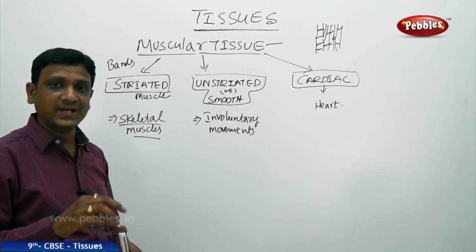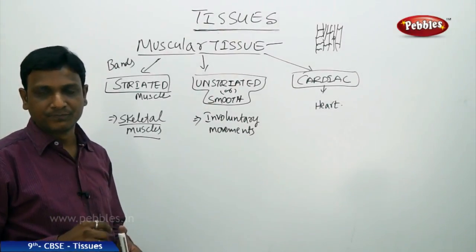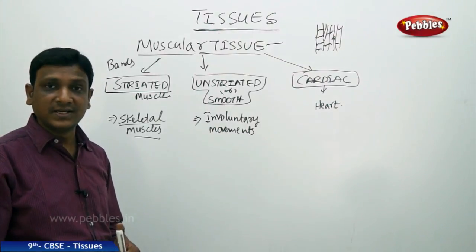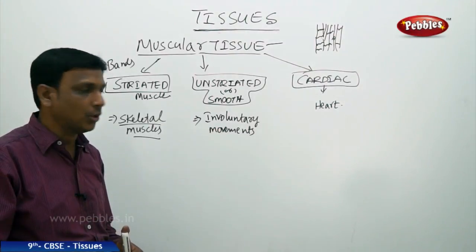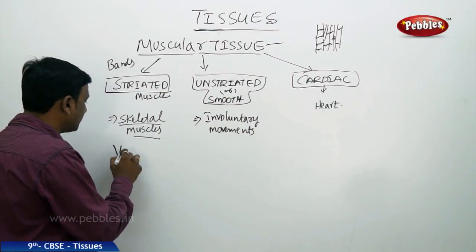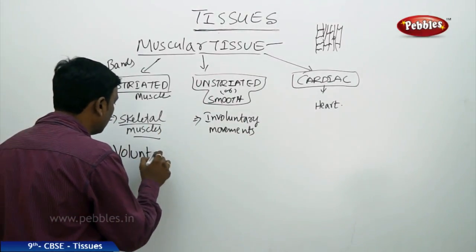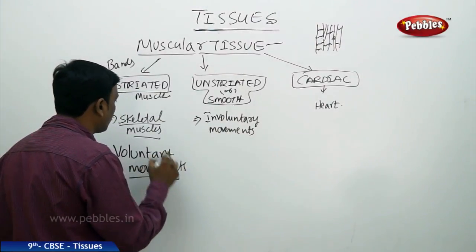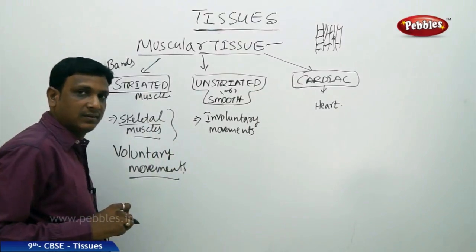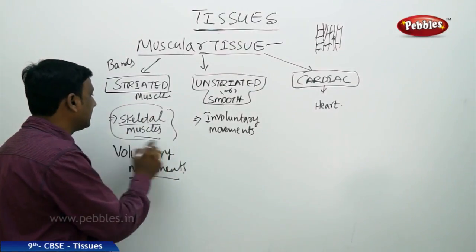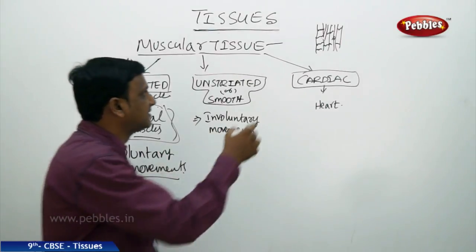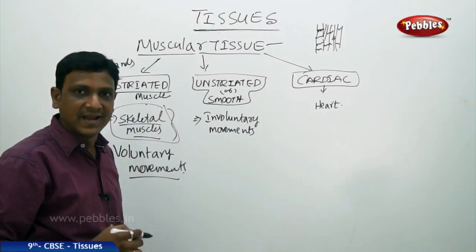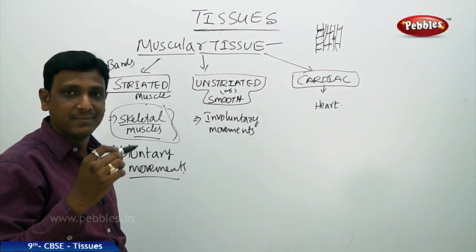Voluntary movements are under your will — if you want to lift your hand you can, if you don't want to you can leave it down. These movements under our will are executed by skeletal muscles. The skeletal muscle is striated — it has bands. If you observe a slide of striated muscle under a microscope, you will be able to see those bands.